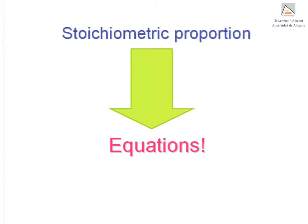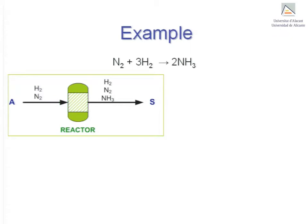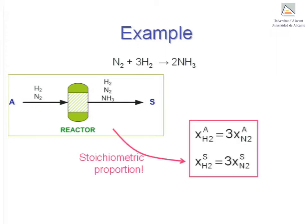Let's see an example. Imagine that we have a reactor where gaseous hydrogen and nitrogen are provided in stoichiometric proportion to produce ammonia. Based solely on this information, that the reactants are provided in stoichiometric proportion, we are able to immediately deduce that the molar fraction of hydrogen is 3 times that of nitrogen in streams A and S. This information can be expressed using the equation shown.